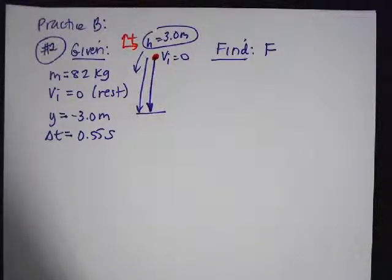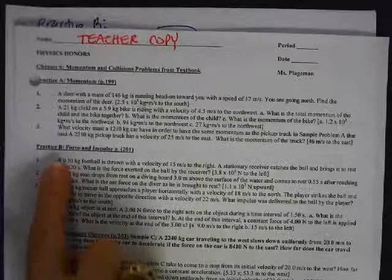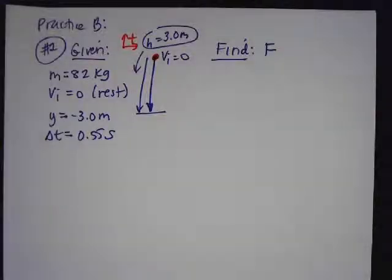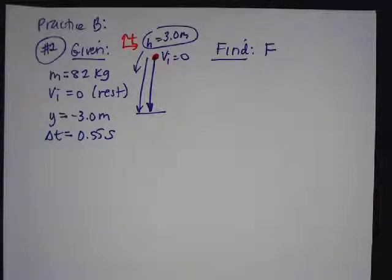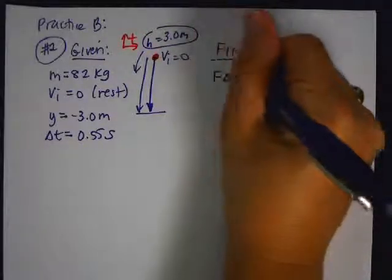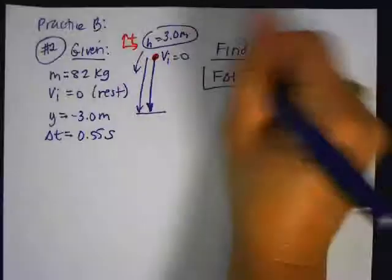Well, I know I'm doing impulse momentum because when we do our practice problems, it says here, practice B, force and impulse. So I know what equation I'm going to use because all the problems use the same equation. The equation that we use is F∆t is equal to m∆V. So I know this is what I'm going to use.